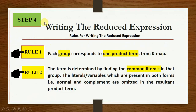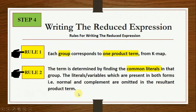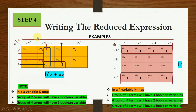Step 4 is writing the reduced expression. There are two rules. Rule 1: each group corresponds to one product term from the KMAP. Rule 2: the term is determined by finding the common literals in that group. The literals or variables which are present in both forms — normal and complement — must be omitted from the resulting product term.